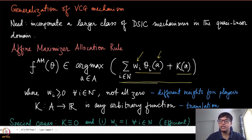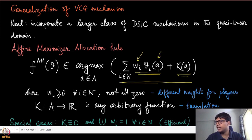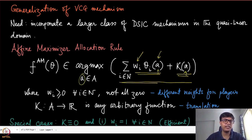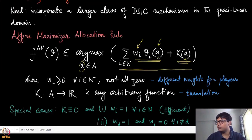This affine sum consists of a weighted sum and a translation factor kappa, both evaluated at a specific allocation a. The affine maximizer picks the allocation which maximizes this affine sum — hence the name affine maximizer. We also assume that the weights wi are non-negative.